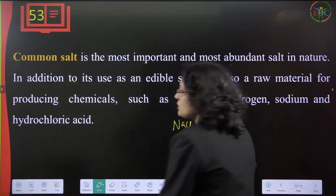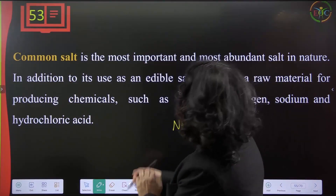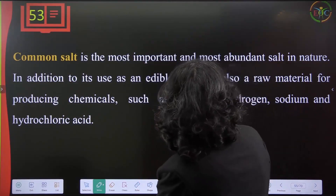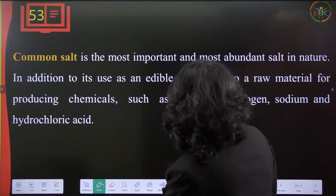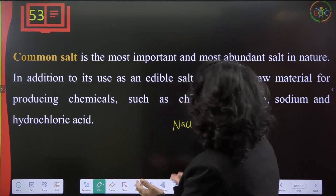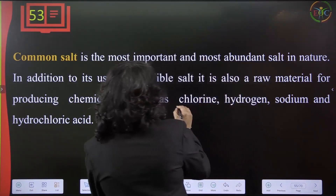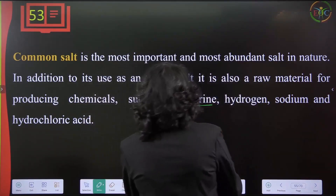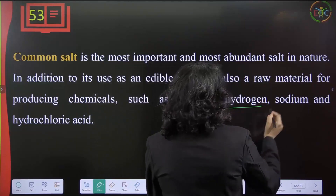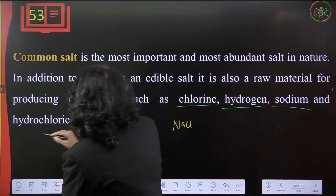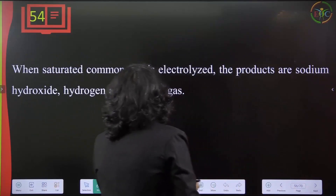Common salt (NaCl) is the most important and most abundant salt in nature. In addition to its use as edible salt, it is used as a raw material for producing chemicals such as chlorine, hydrogen, sodium, and hydrochloric acid.